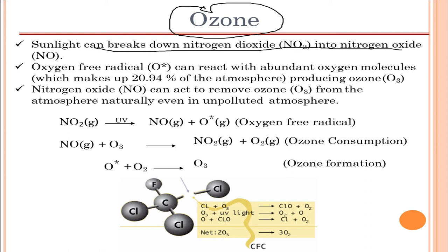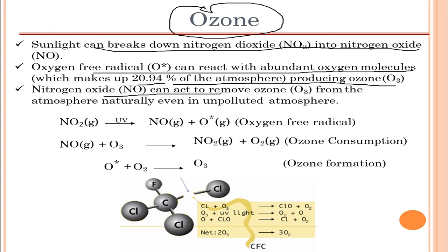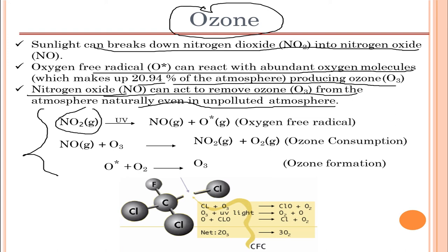Moving to ozone: sunlight can break down nitrogen dioxide into nitrogen oxide. Nitrogen dioxide does not readily exist under cloudy conditions, but in the presence of sunlight it dissociates into nitrogen oxide and an oxygen free radical. That free radical reacts with abundant oxygen molecules — which make up about 20.9 to 21 percent of the atmosphere — to produce ozone. Nitrogen dioxide can also act to remove ozone from the atmosphere naturally, even in unpolluted conditions.